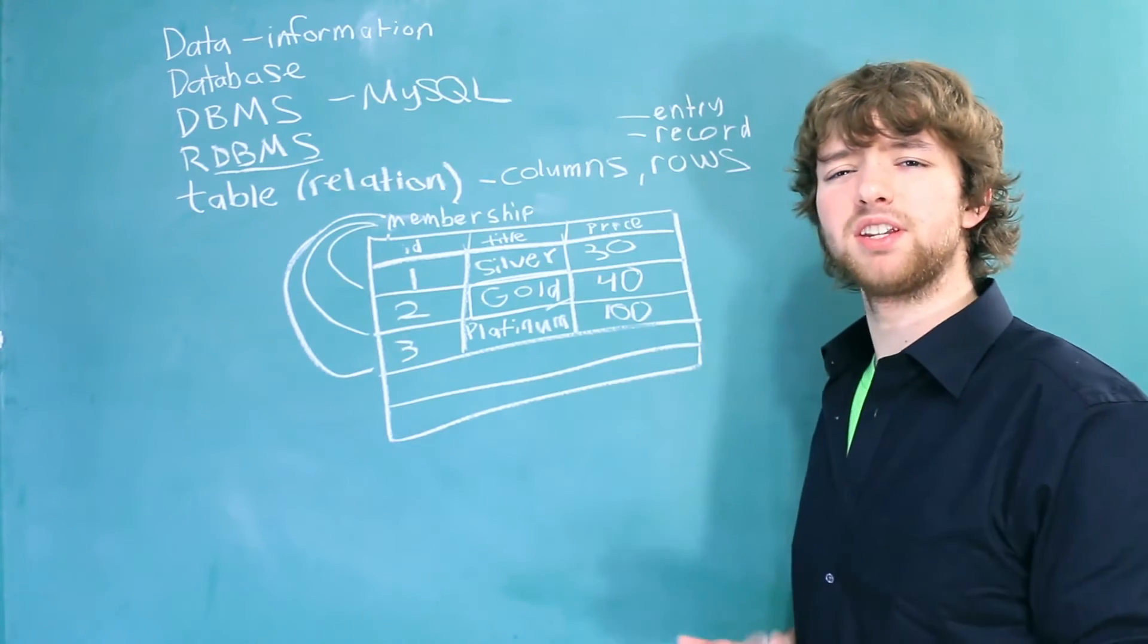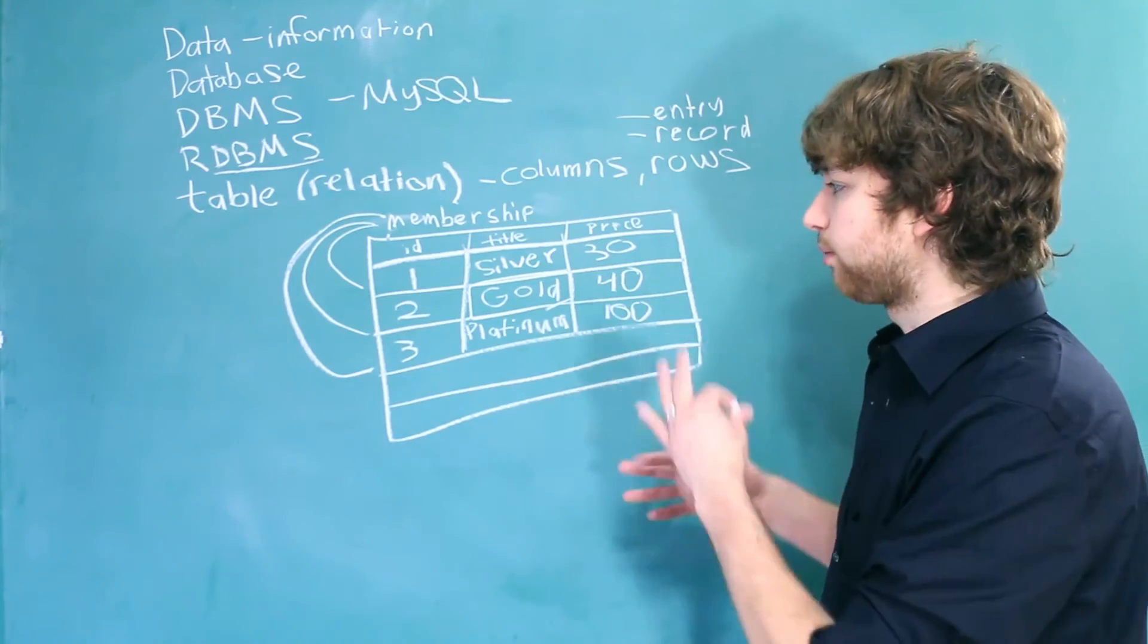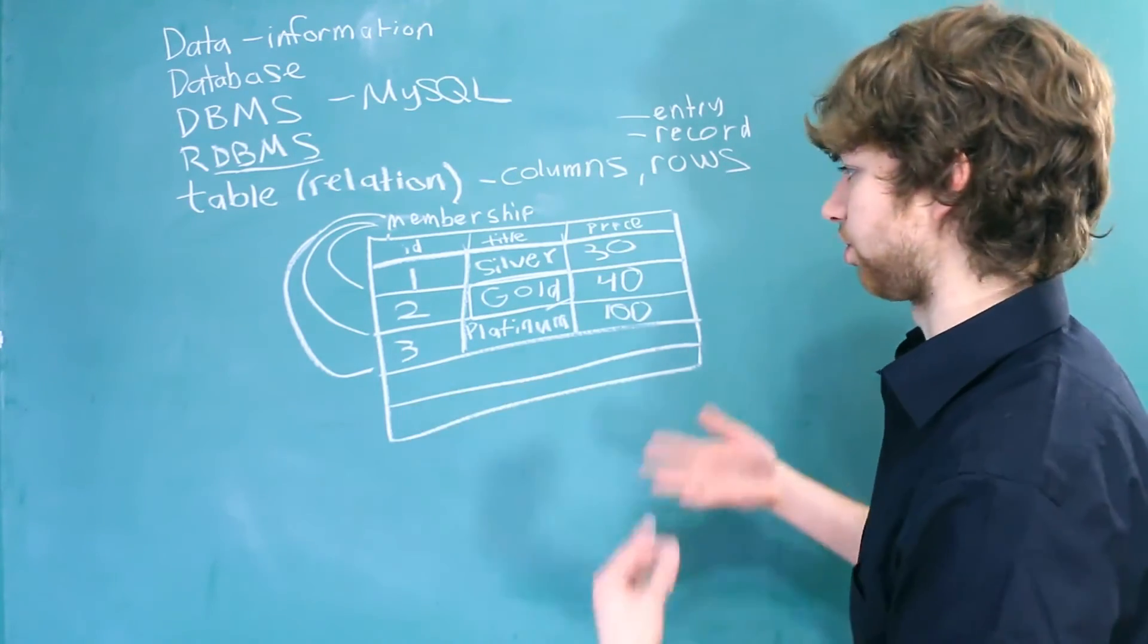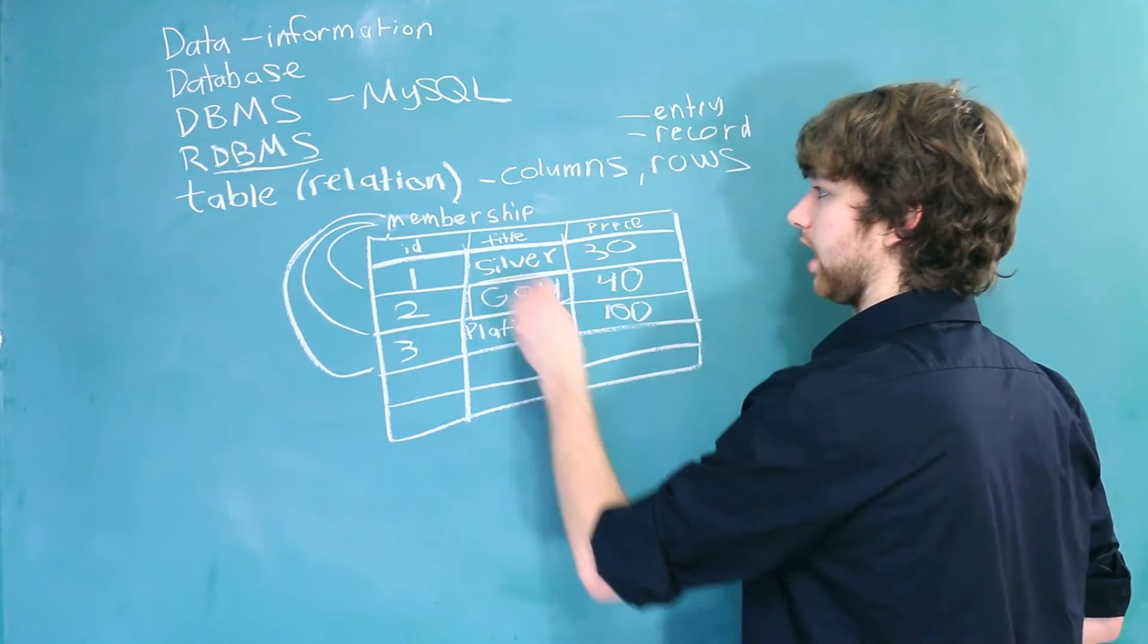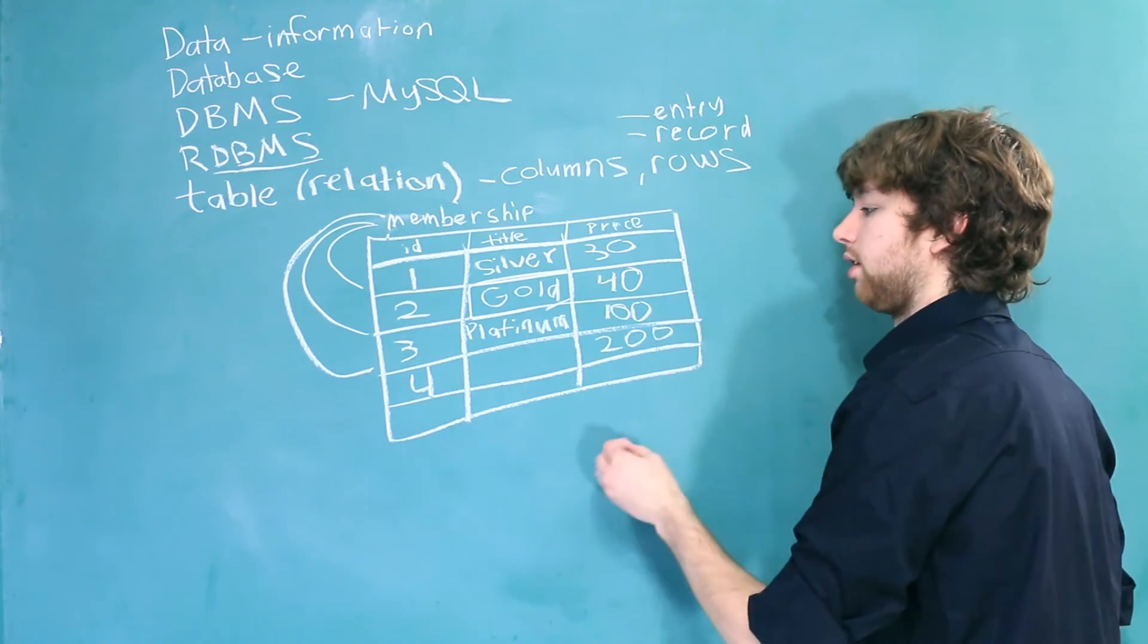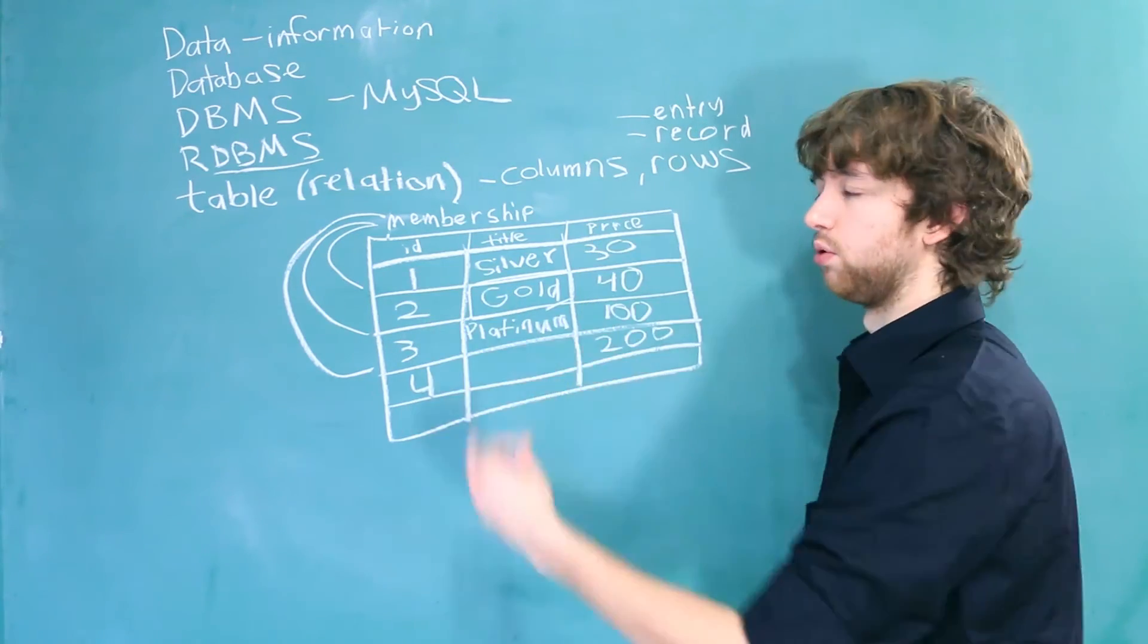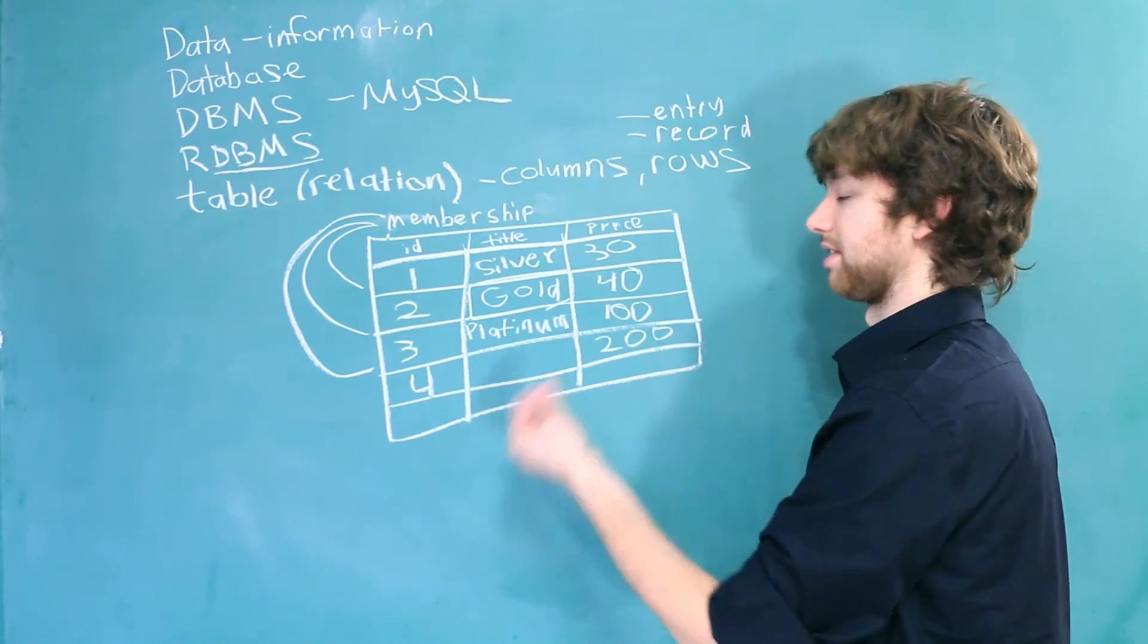Now, when we have a table, sometimes it is appropriate to leave some information out. In this table, we don't really have a good column that we can do this for. But let's just go through it and see what that would look like. We could have another membership with the ID of 4 and the price of $200. But the title has no value. As you can see, it doesn't make a whole lot of sense in this membership table because it's important that every membership has a title.